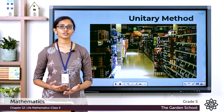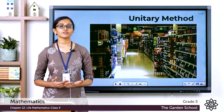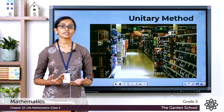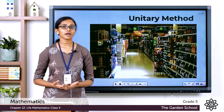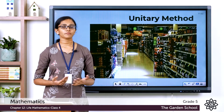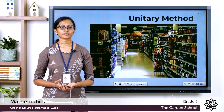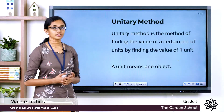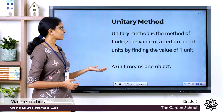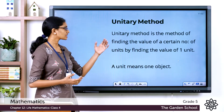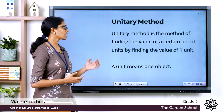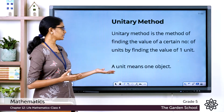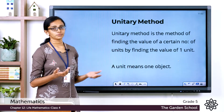The unitary method is a method to find the value of a required number of units given the total value of a few units of the same object. In other words, it is a method of finding the value of a certain number of units by finding the value of one unit — where one unit means one object.